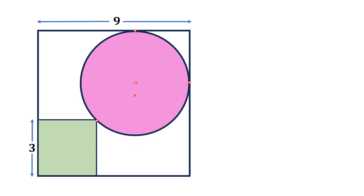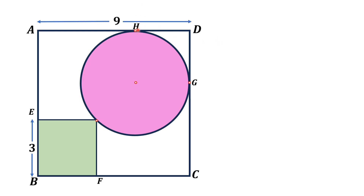First, we draw some important points. This is the center of the circle, and these three points are the tangency points of the circle. We label the corners of the larger square as A, B, C, D and the tangency points as H, G, F, and E.